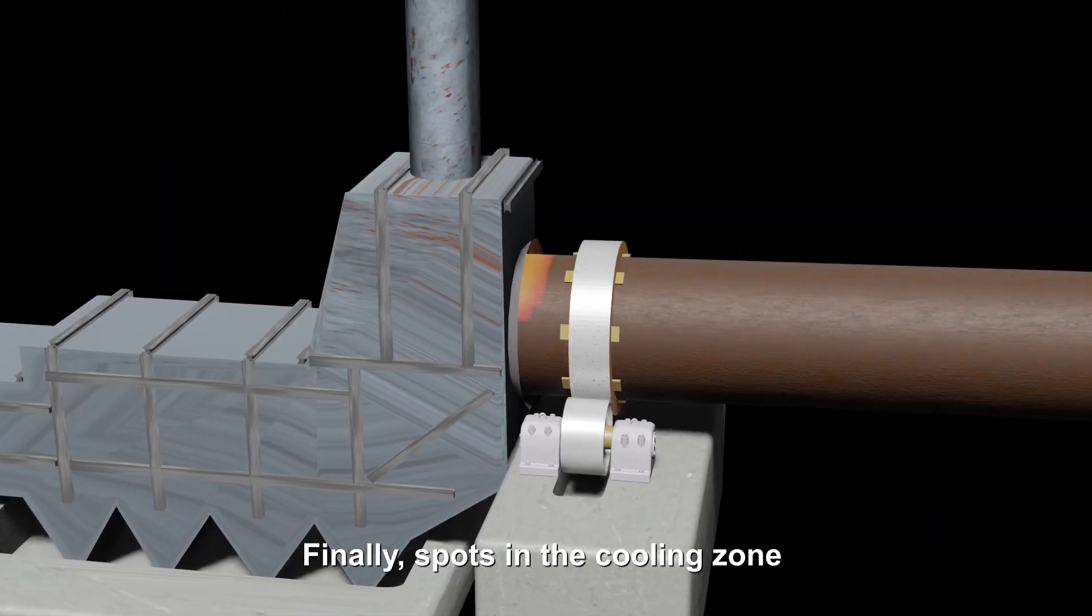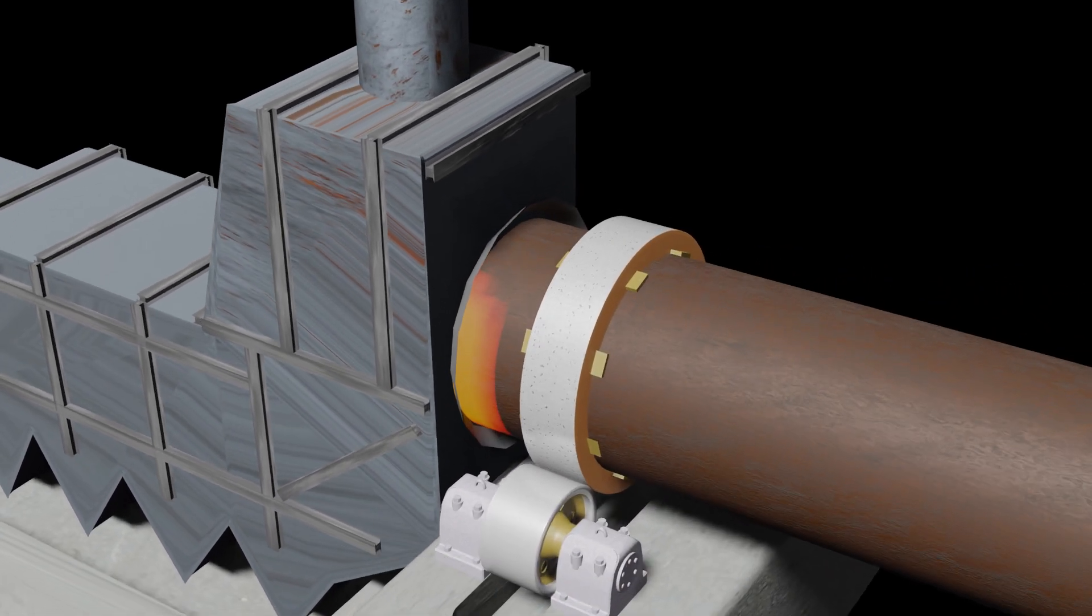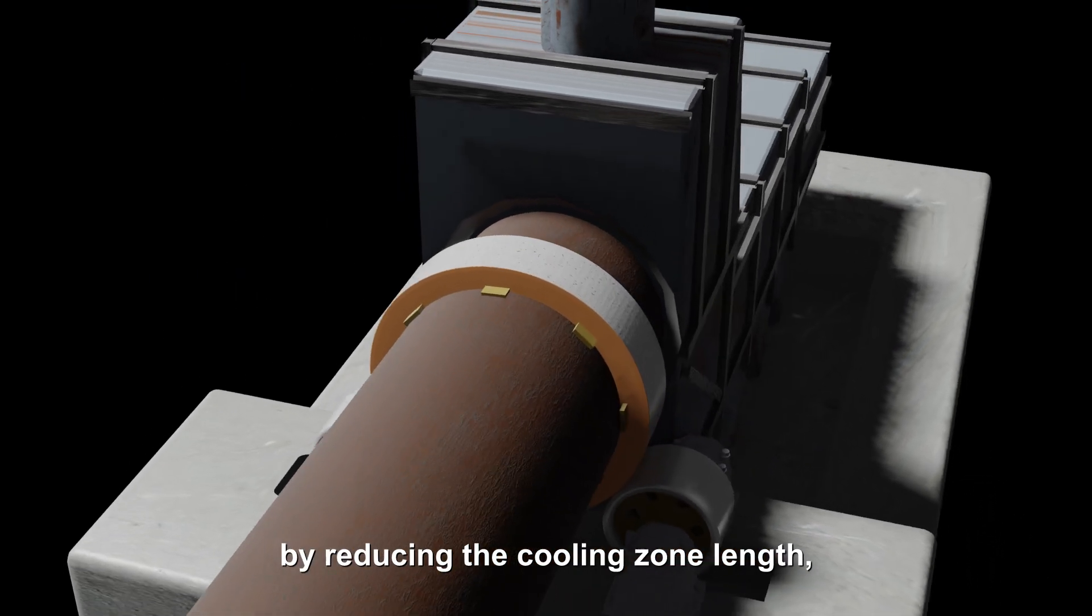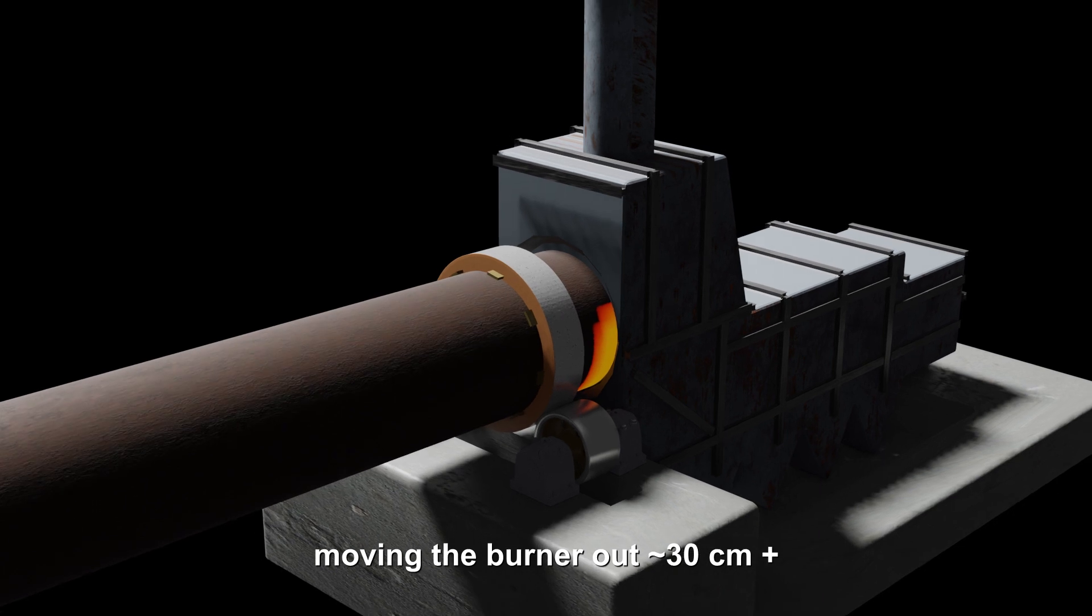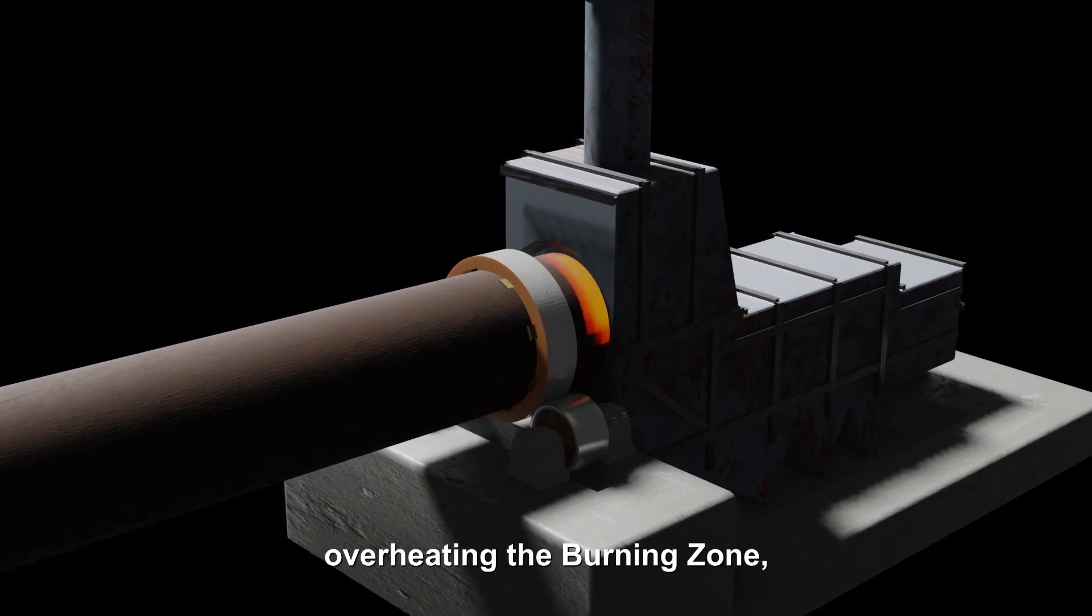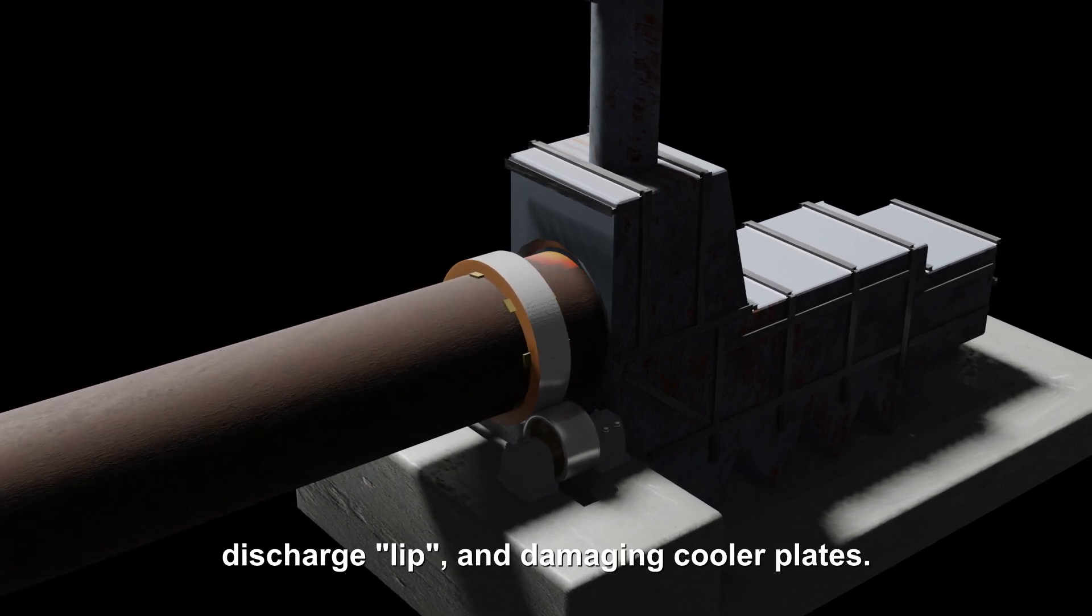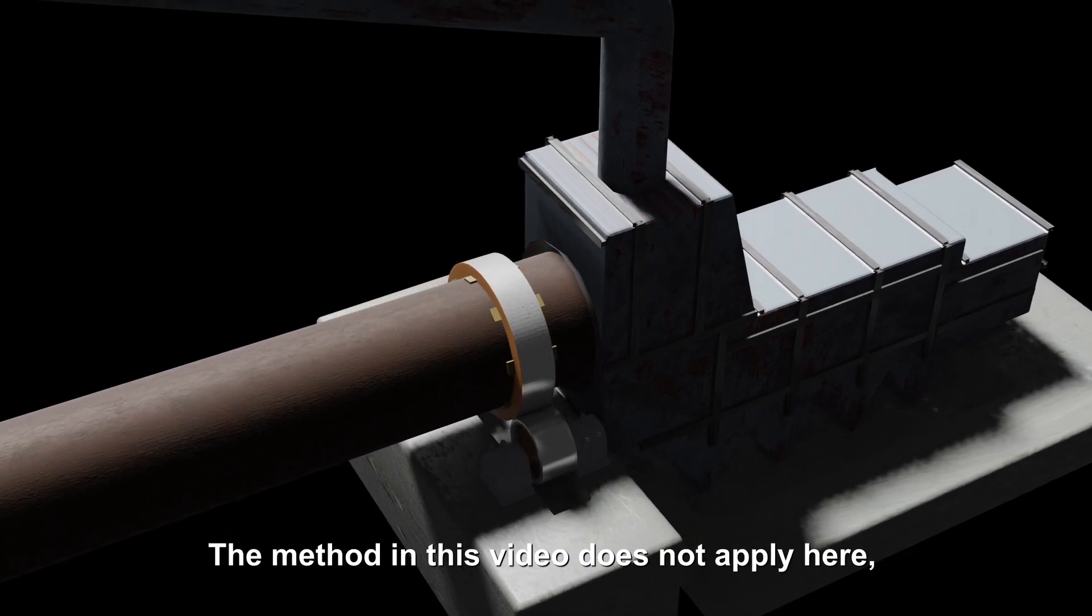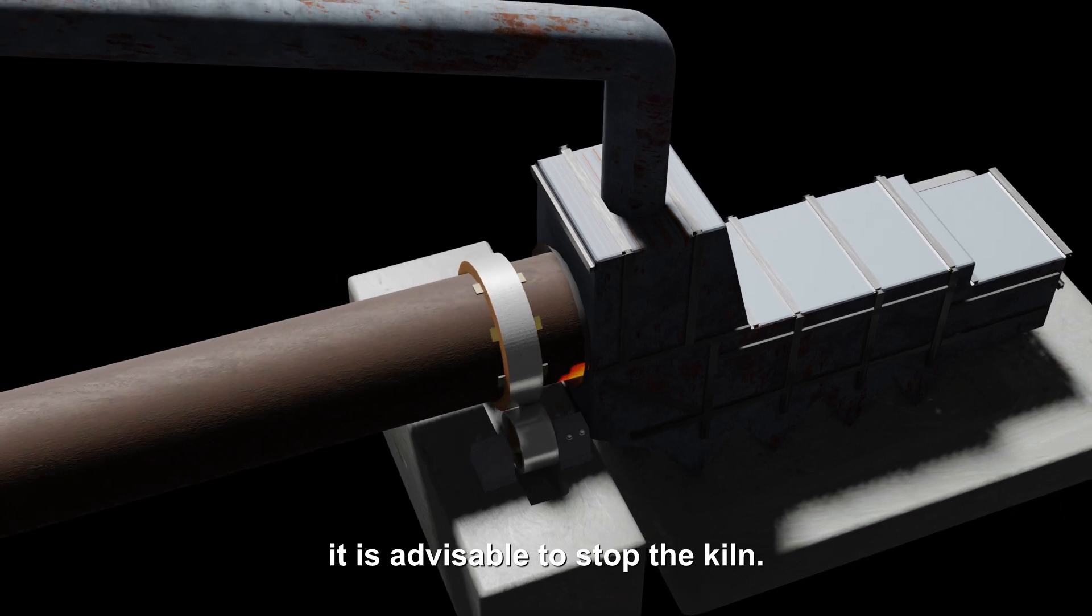Finally, spots in the cooling zone or discharge end of the kiln. Even when these spots can be covered with coating by reducing the cooling zone length, moving the burner out 30 centimeters and overheating the burning zone, there is a risk of burning the plates of the kiln discharge lip and damaging cooler plates. The method in this video does not apply here. It is advisable to stop the kiln.